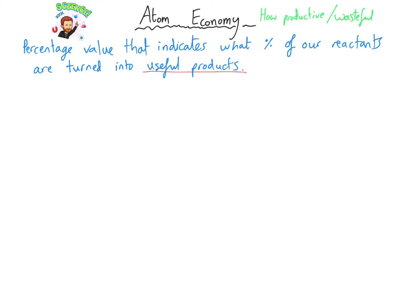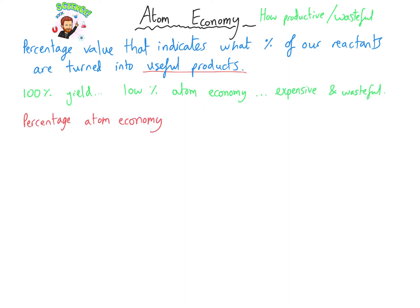We could get a 100% yield but only convert a small proportion of our reactants into products, and so that might actually not be financially viable. The atom economy percentage is really useful because it lets us know how many raw materials we're going to need and how effective we're being with the raw materials. And so if we make a small amount of waste, that's obviously really good for the environment.